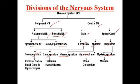The telencephalon contains the cerebral cortex, basal ganglia, and hippocampus. The diencephalon consists of the hypothalamus and thalamus. The metencephalon consists of the pons and cerebellum. The myelencephalon consists of the medulla oblongata.